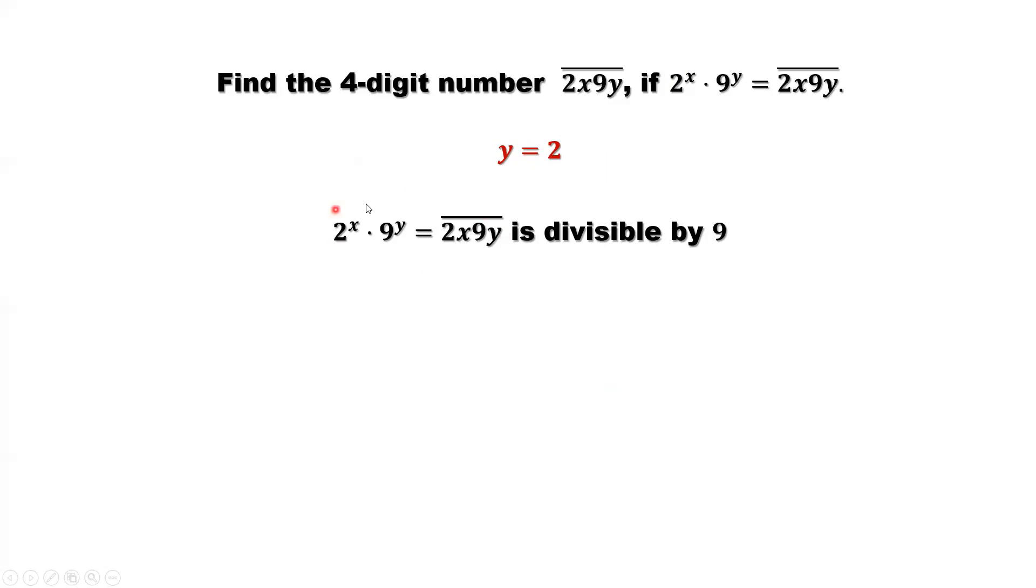Look at this given condition again. The left hand side, we have 9 as a factor. The right hand side, we have 9 as a factor. The left hand side is divisible by 9. The right hand side is also divisible by 9.